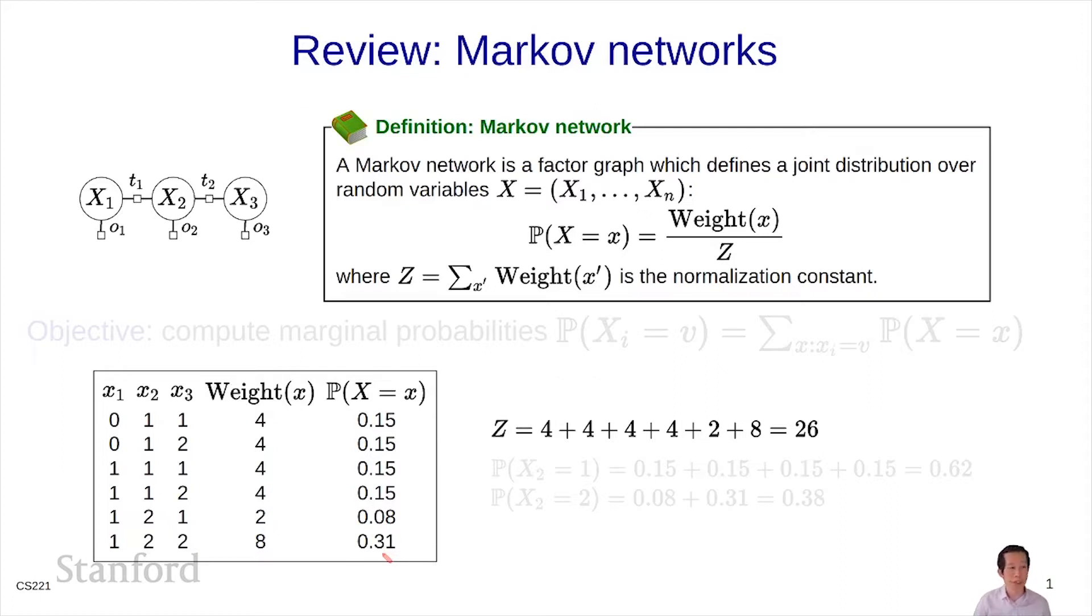The cool thing with Markov networks is that you can compute marginal probability, and that's going to be our focus today. Marginal probability focuses on one particular variable xi, and asks what values could it take on. To get that, we're going to sum over all possible assignments where xi does actually equal the joint probability of that assignment.